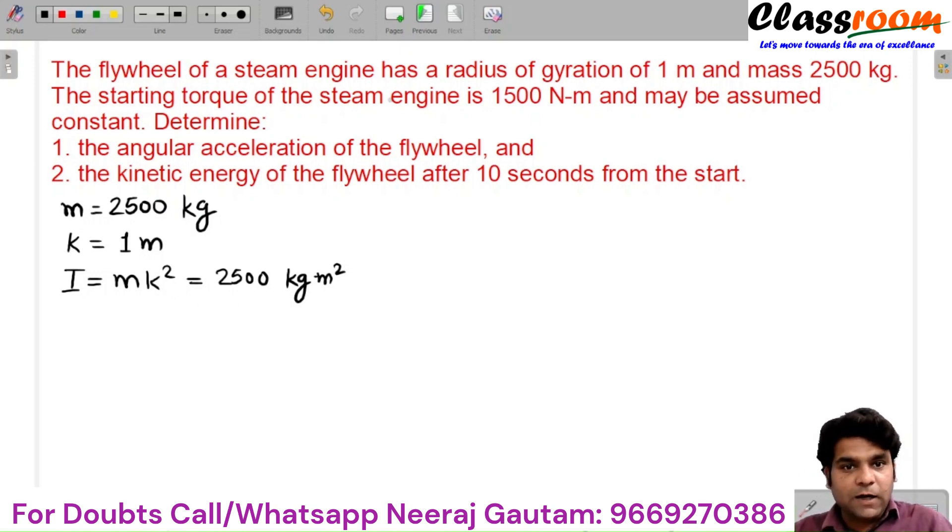The starting torque of the engine, T = 1500 N·m, and may be assumed as constant, so this starting torque remains constant. Determine: 1) the angular acceleration of the flywheel, and 2) the kinetic energy of the flywheel after 10 seconds from the start.